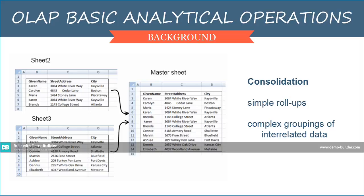OLAP consists of several basic analytical operations, but we'll only discuss three. First is Consolidation, which involves aggregation of data, and involves simple roll-ups or complex groupings involving interrelated data. Data about sales offices can be rolled up to the district level, while district-level data can be rolled up to a regional-level perspective.